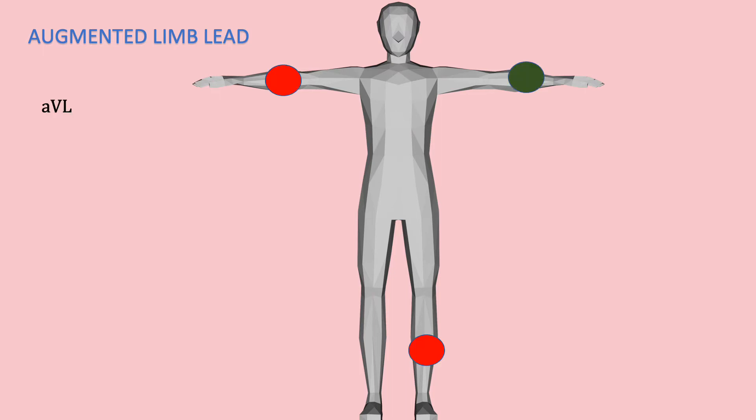So I would like to start off with AVL. You will have virtual electrodes generated in between your right arm and your left ankle and positive electrodes on your left arm. While for AVR, you will have positive electrodes on the right arm and two negative electrodes on the left arm and left leg respectively.